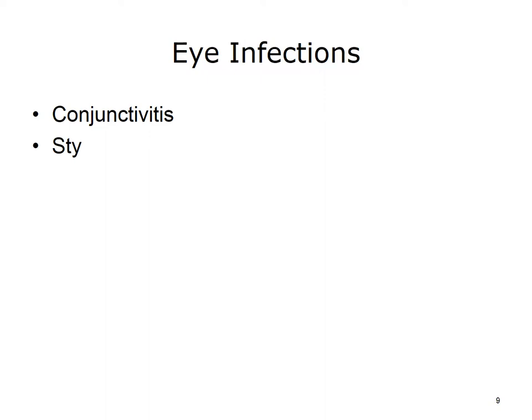Symptoms of eye infections may include redness, itching, swelling, discharge, pain, or problems with vision. Treatment depends on the cause of the infection and may include compresses, eye drops, creams, or antibiotics.